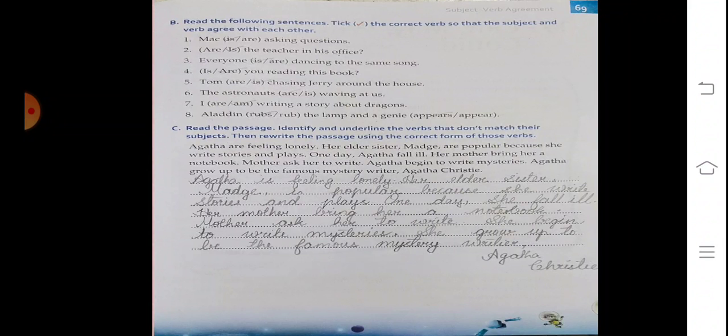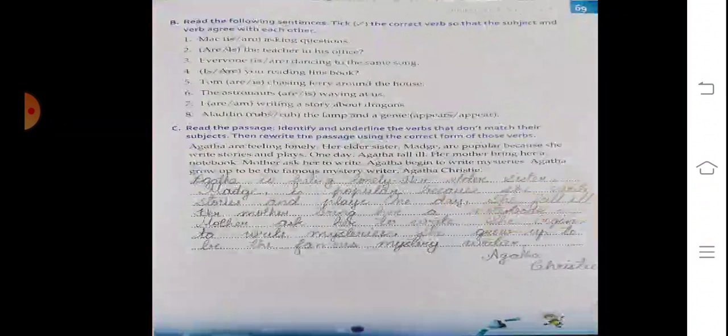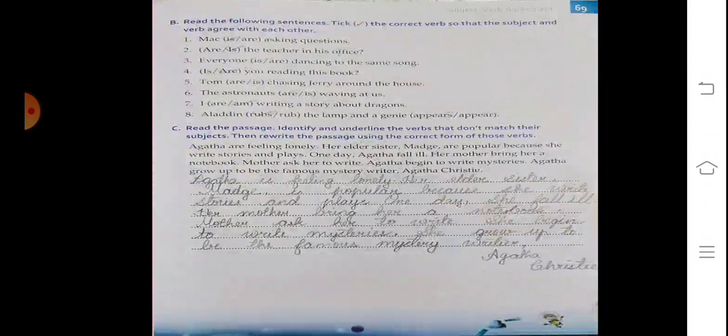Now Exercise C: read the passage, identify and underline the verbs that don't match their subject. Then write the passage using the correct form of the verb. I will read the full question. Agatha are feeling lonely. Her elder sister Maggie are popular because she writes stories and plays. One day Agatha falls ill. Her mother brings her a notebook. Mother asks her to write. Agatha begins to write mysteries. Agatha grow up to be the famous mystery writer, Agatha Christie. Now you need to change the verbs that don't match with the subject.